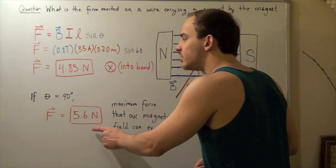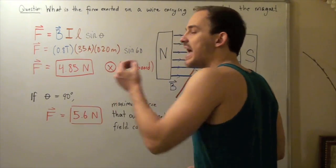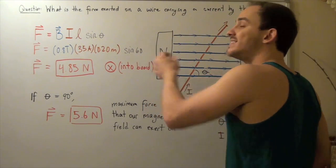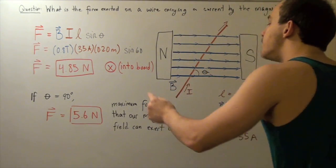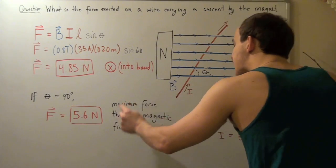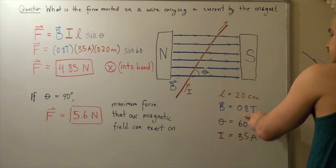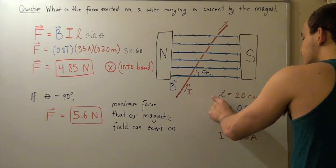Note that this is larger than this force. And that's because this force, whenever our angle is 90 degrees, represents the maximum force that our magnet could create when our field is this, and when our length is this, and also when our current is this.